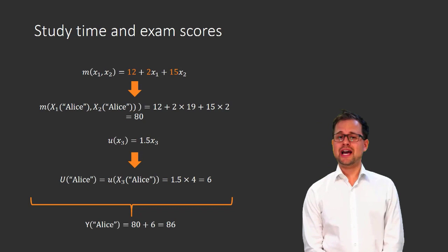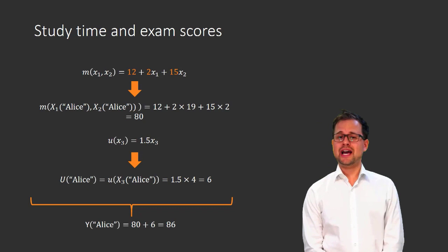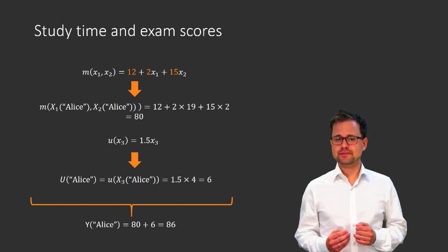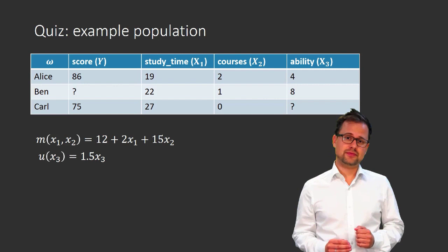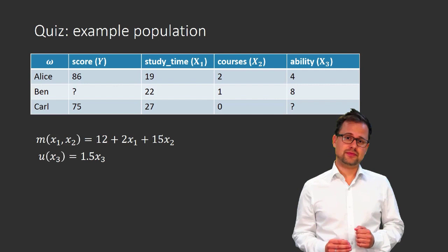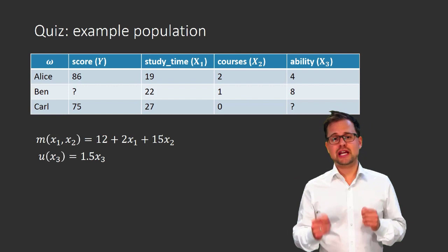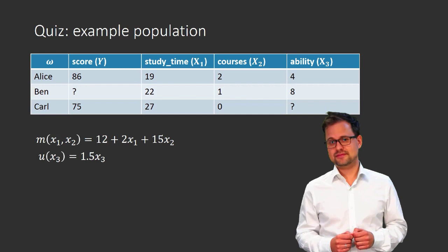A good strategy for getting used to this model is to play around with it. We just figured out Alice's exam score. Now let's figure out Ben's exam score. I suggest you pause the video, take a pen and paper, and do the calculations yourself. Ben's exam score is 83.